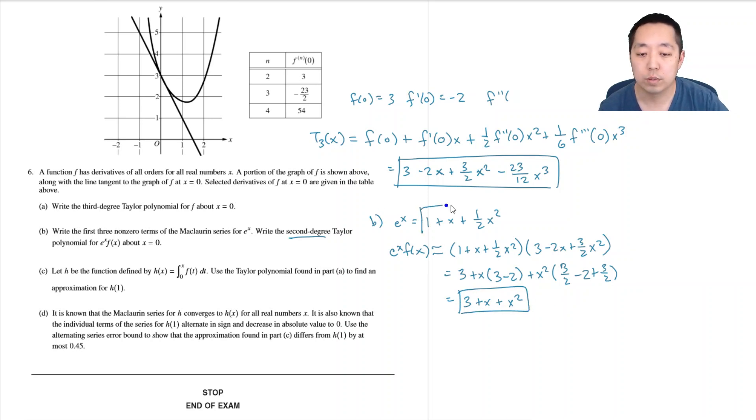Okay, so this is the first three terms. Box that in, those are the first three terms of e^x times f(x).